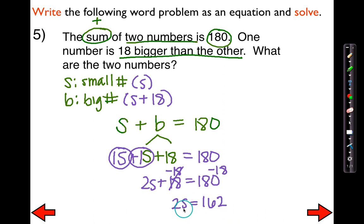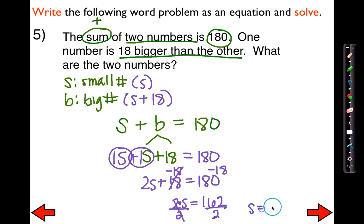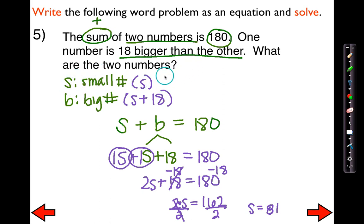Now I'm going to get rid of this coefficient — it means 2 times S. So what's the opposite of multiplying by 2? It would be to divide both sides by 2. By doing this, I'm left with S equals 81. So what did S stand for? S stood for the small number, so the smaller number is going to be 81.